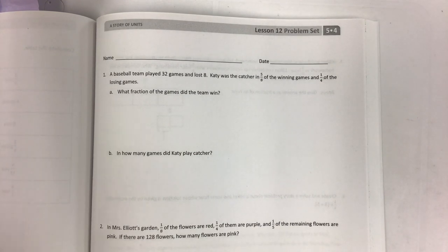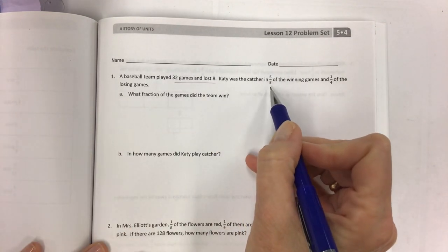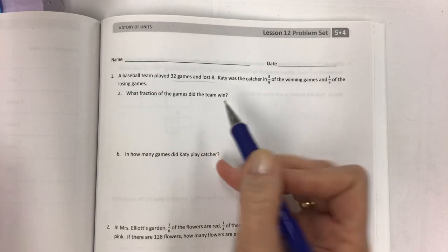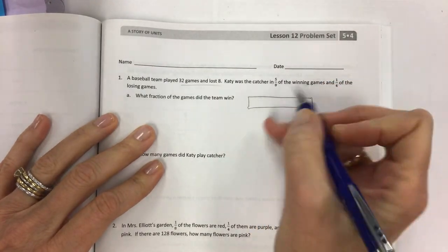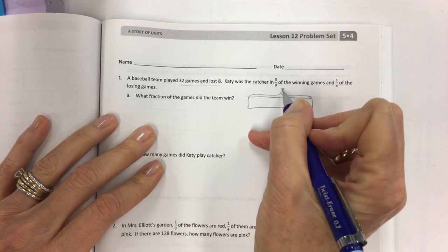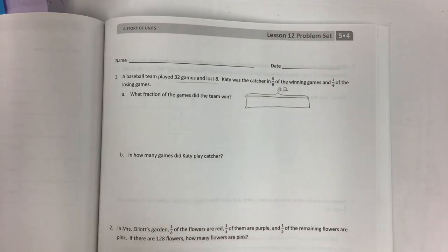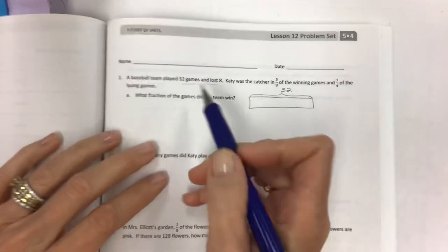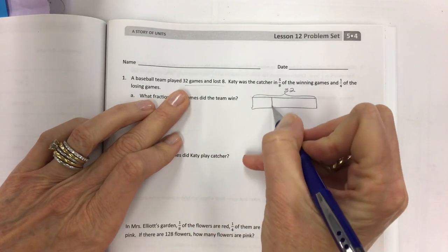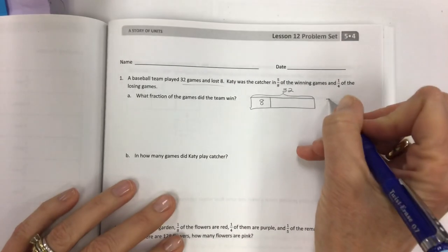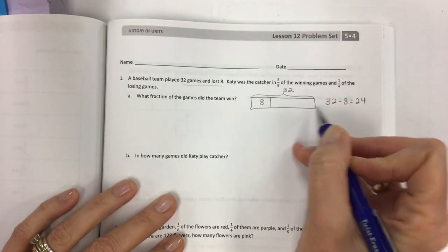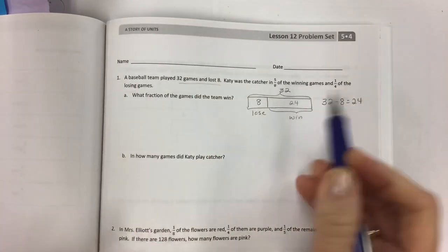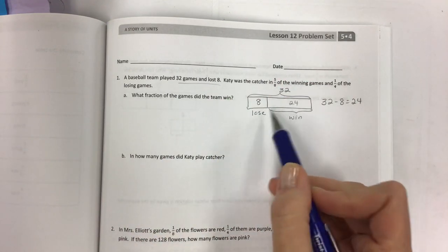A baseball team played 32 games and lost 8. Katie was the catcher in 5/8 of the winning games and 1/4 of the losing games. What fraction of the games did the team win? Sometimes when I read these, they're kind of confusing for me. So we're going to look at the total games and then we're going to break it down from here. If they have 32 games and they lost 8, let's just take out these 8 games right away. And that is going to leave us with 24 wins.